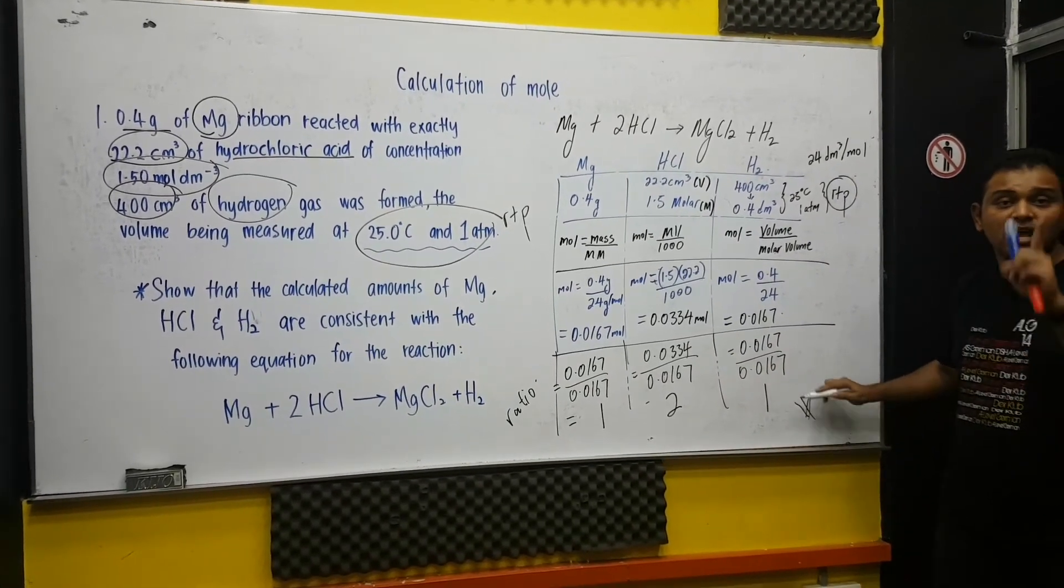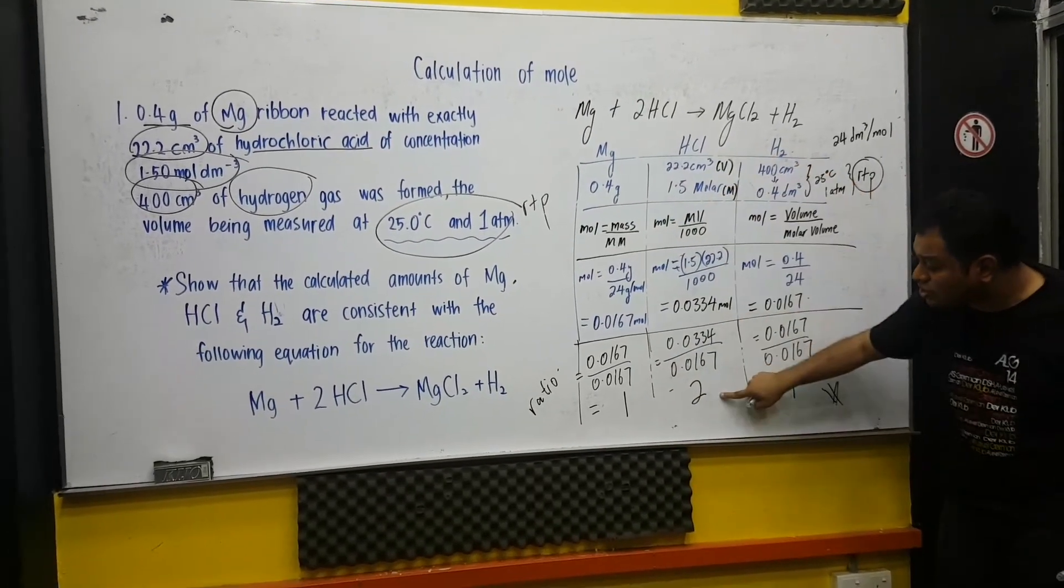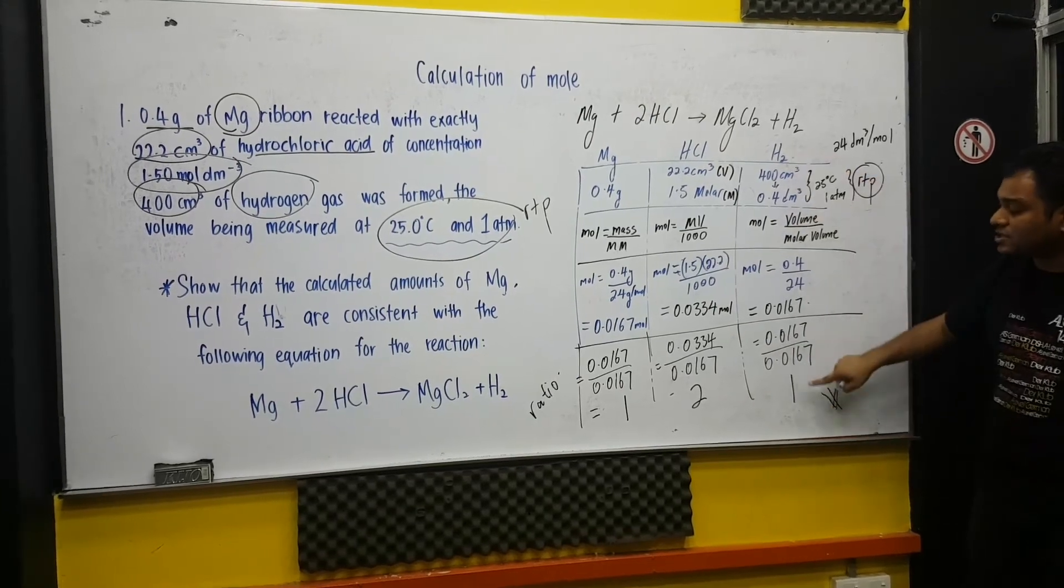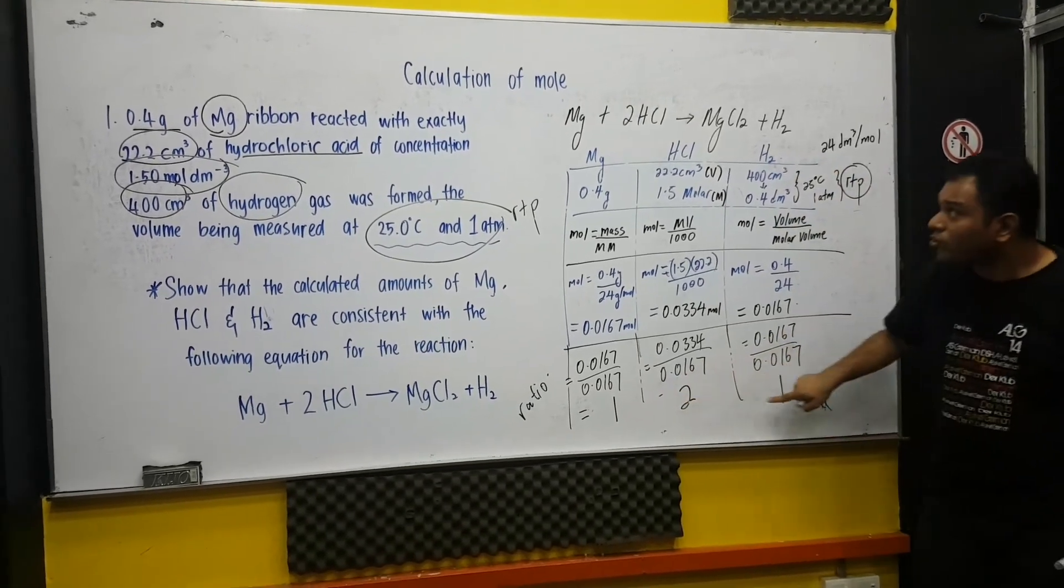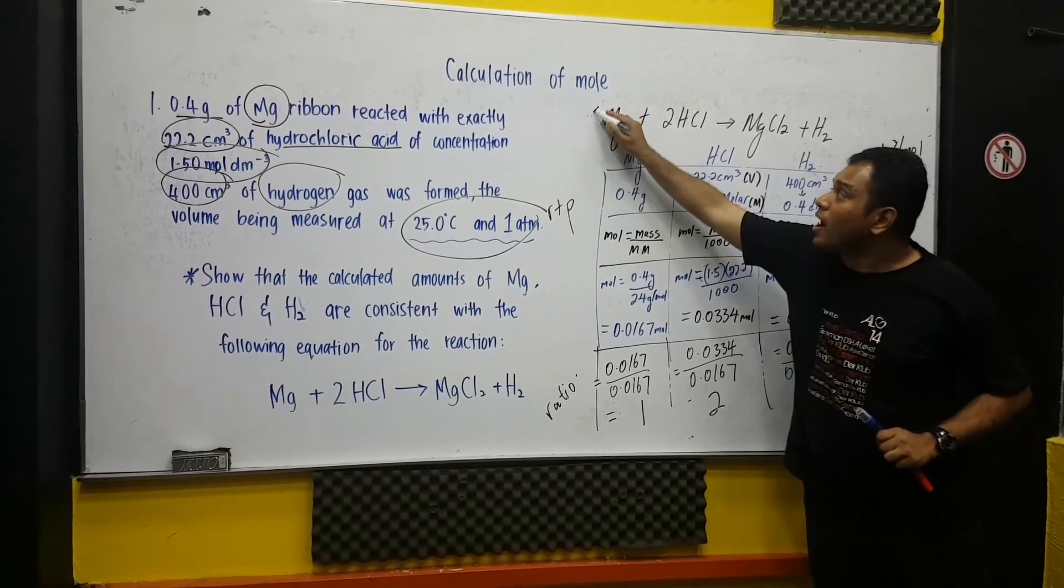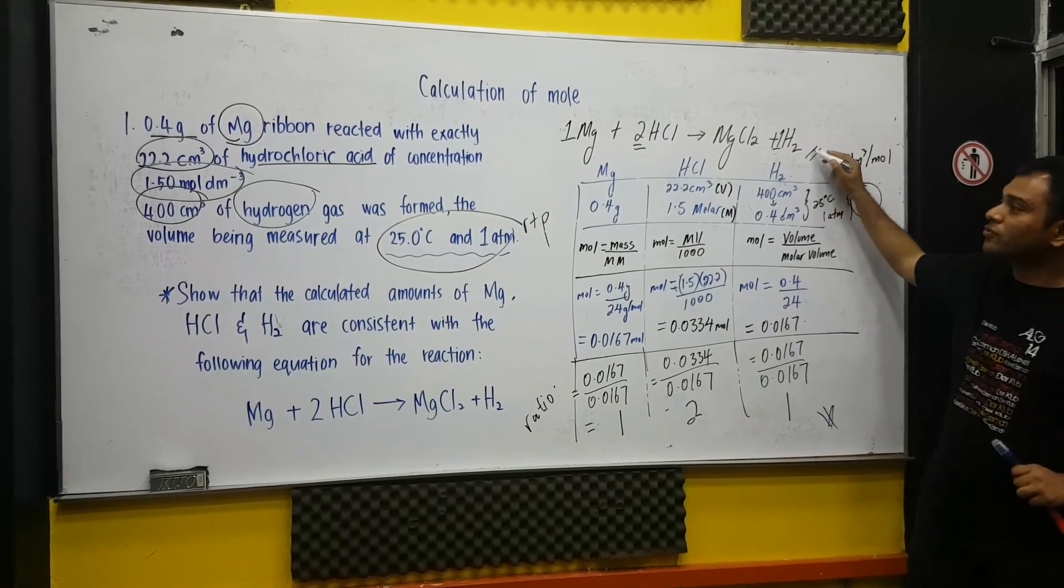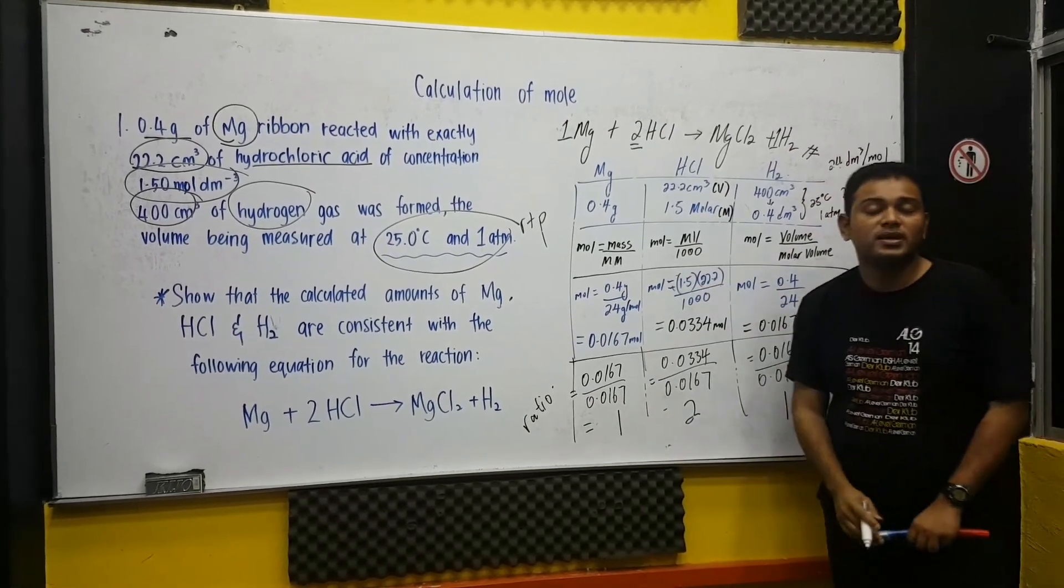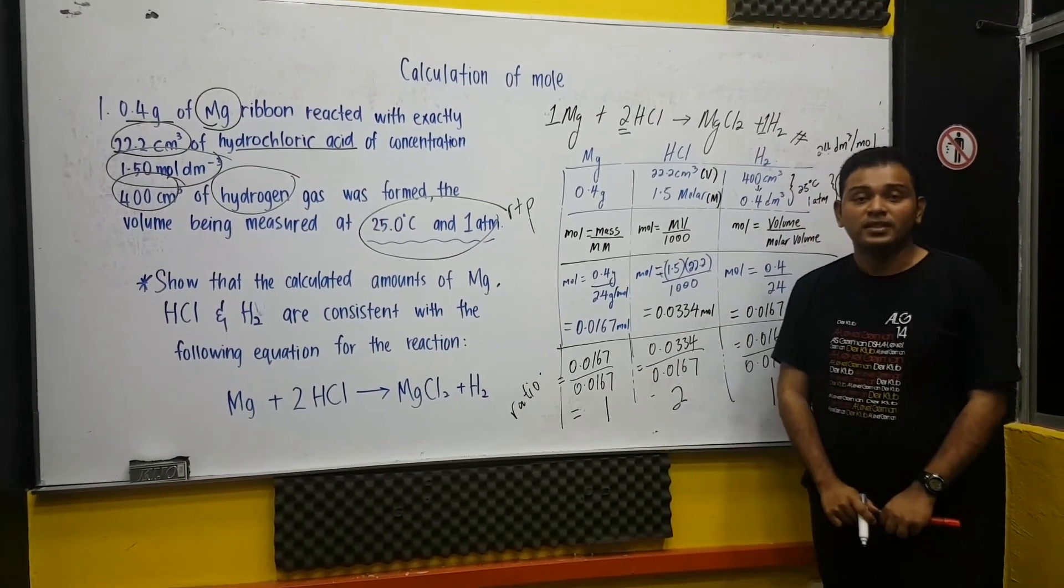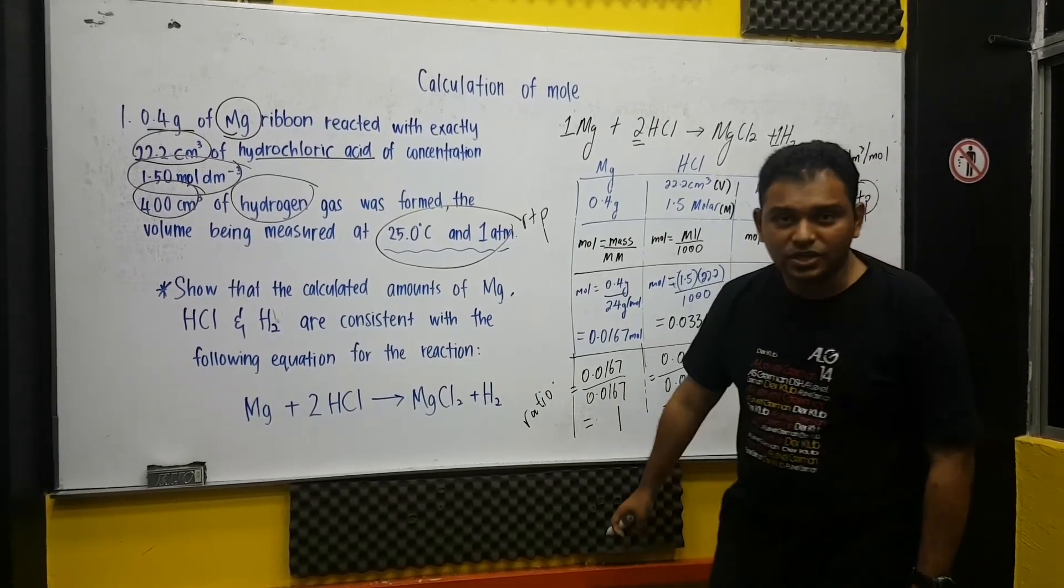Actually, we are done with the question. Look at here. Magnesium is 1. Hydrochloric acid is 2. And the hydrogen gas is 1. 1, 2, 1. This ratio is exactly the same like this. 1, 2, 1. We have proven, we have shown the calculation of the amount. Thank you for it. Wait for more. I'll go from my side. Thank you.